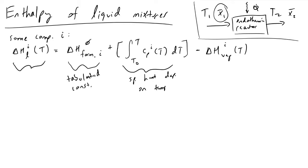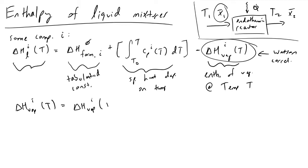And then finally we are going to be subtracting the enthalpy of vaporization of component i at that temperature T, and so this is what makes our life a bit more difficult. This is the enthalpy of vaporization at temperature T, and so to get this term we're going to turn to something referred to as the Watson correlation, and what the Watson correlation tells us is that we can determine the enthalpy of vaporization of component i as a function of temperature.